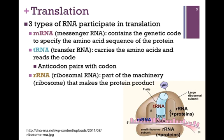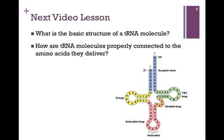Third, we have ribosomal or rRNA. It's actually a part of our molecular machine, the ribosome, that makes the protein product. Highlighted here in brown, we have both a large and small ribosomal subunit. In our next video lesson, we want to look at the basic structure of a tRNA molecule, and we want to see how we connect the correct amino acid to the right tRNA molecule, so that we deliver the correct amino acid in the right sequence.